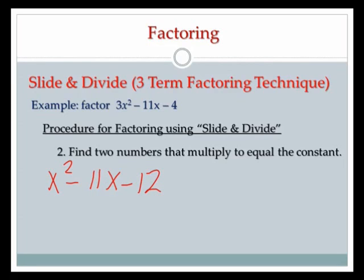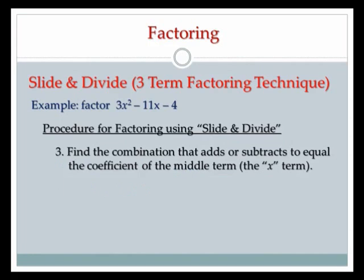I have a few options. The easy one is 1 and 12. I also have 2 and 6, and 3 and 4. I think I got all the combinations. So now I'll move on to step three.